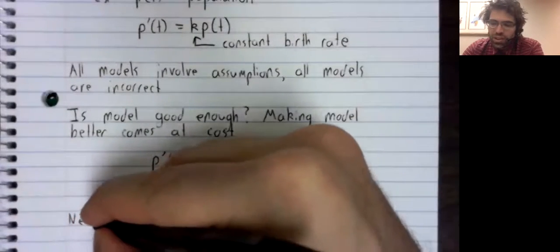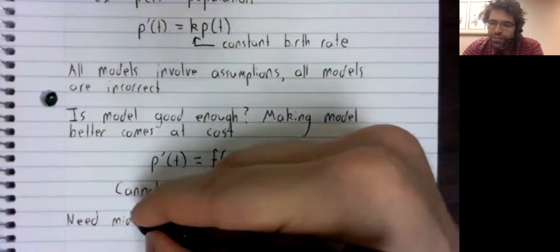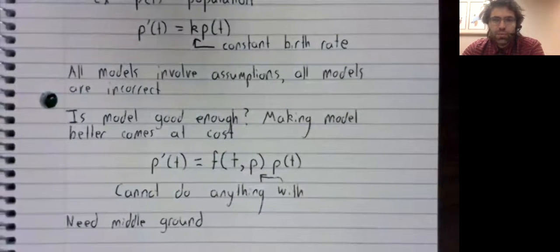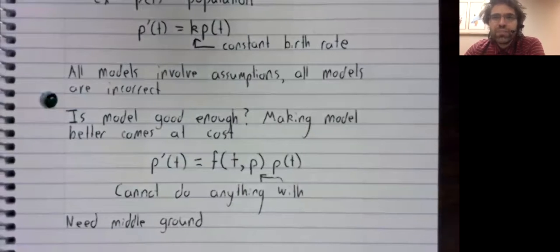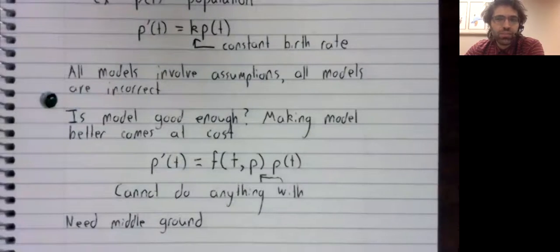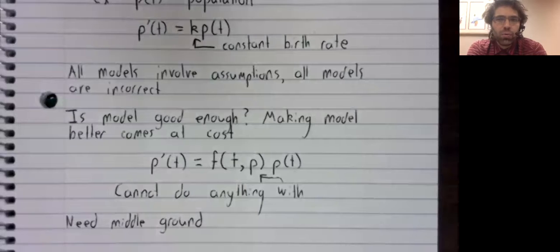So what we need is some kind of middle ground. Our model is going to be incorrect. We need it to be good enough that it still makes valuable predictions, but not so fine-tuned that we can no longer do anything with it. And this isn't really a modeling course, but we'll come back to this idea several times throughout the semester to the idea that the model we're looking at has flaws, and the question of whether these flaws stop it from being useful.